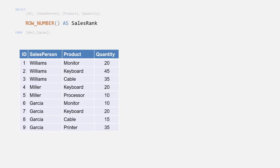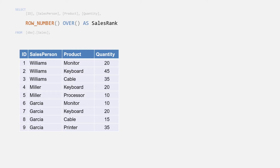The ROW_NUMBER function adds an incrementing number to each row depending on the window settings. Each new row is incremented by one in the order of one or more columns specified in the OVER clause. To use window functions we need to add the OVER clause after the function to specify what fields we want to use to give the function its order and how we want the function to group the data to provide the window. The ROW_NUMBER function needs an ORDER BY in the OVER clause to tell the server how we want to order the row numbers.